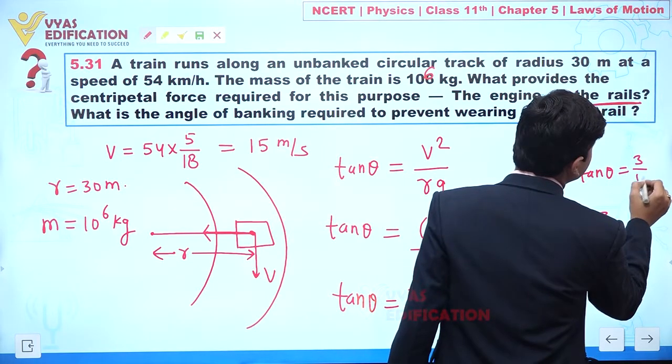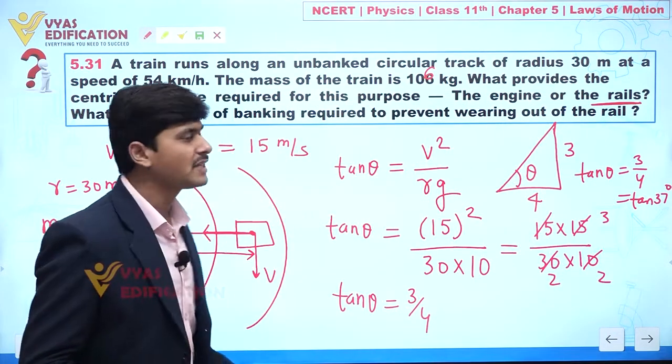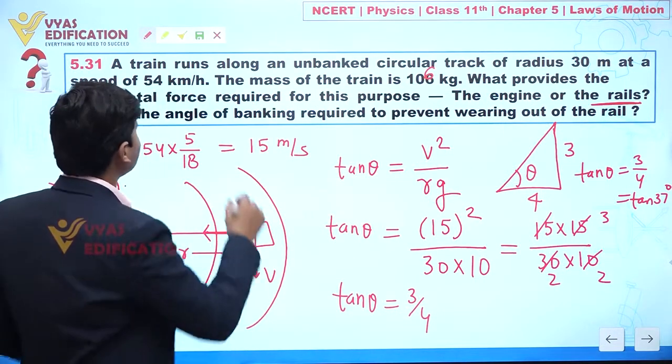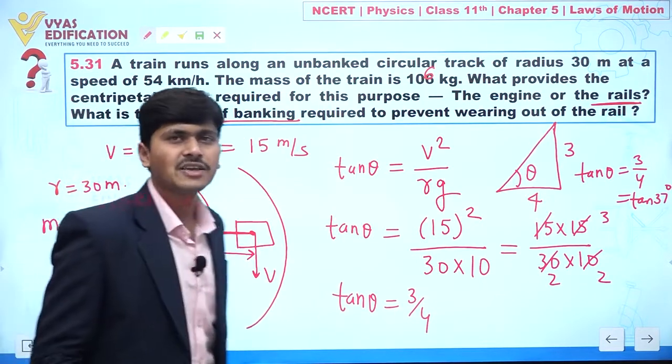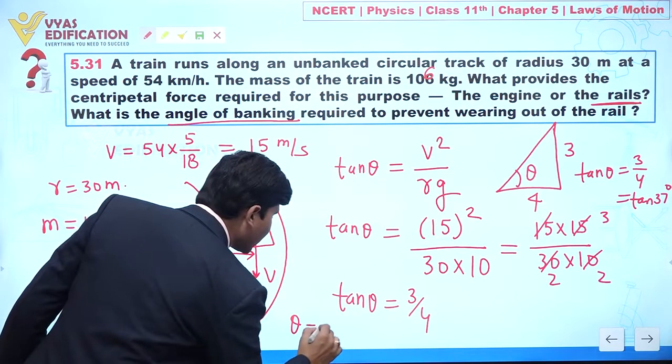tan θ equal to 3 by 4, I can say this is equal to tan of 37 degrees. So from here we can say the angle of banking is given by 37 degrees.